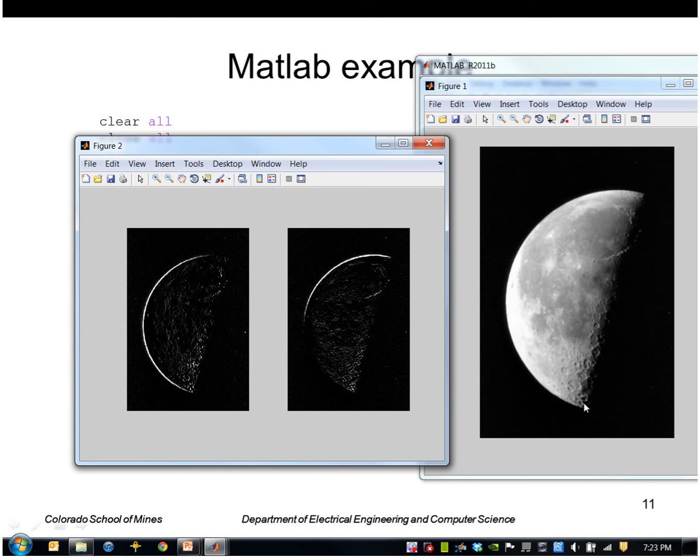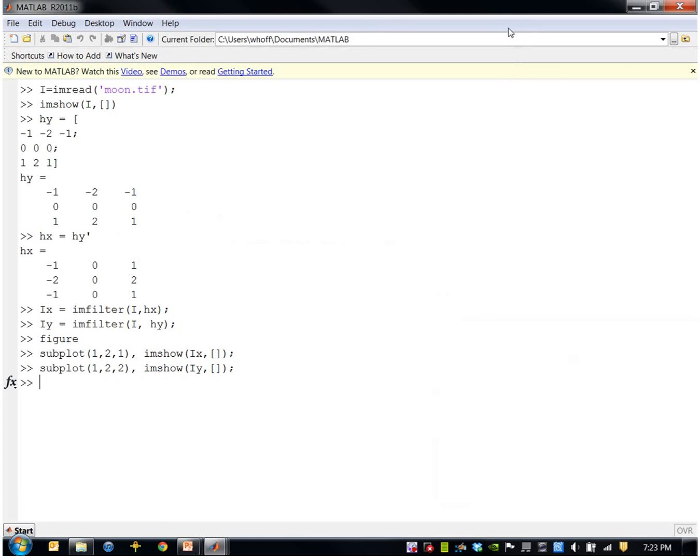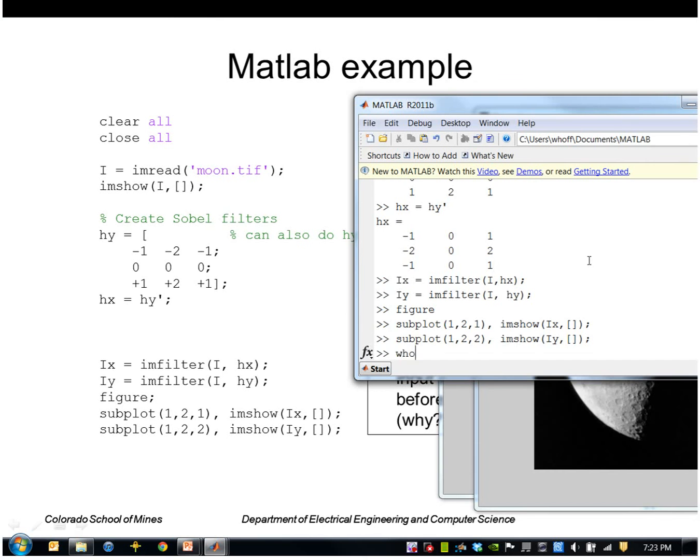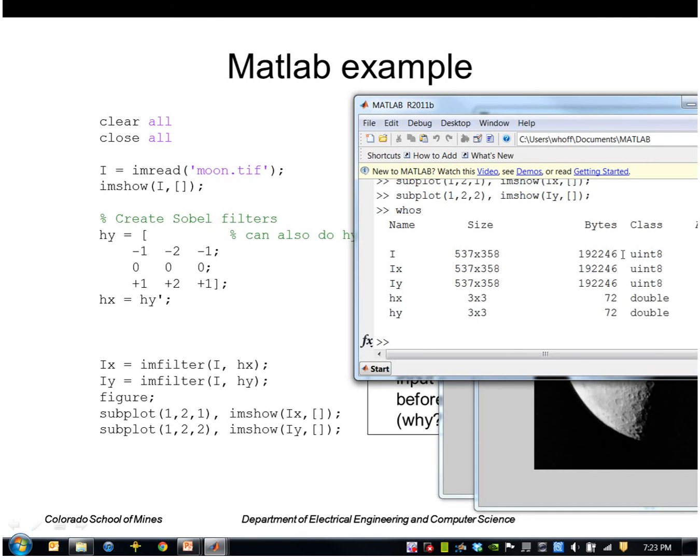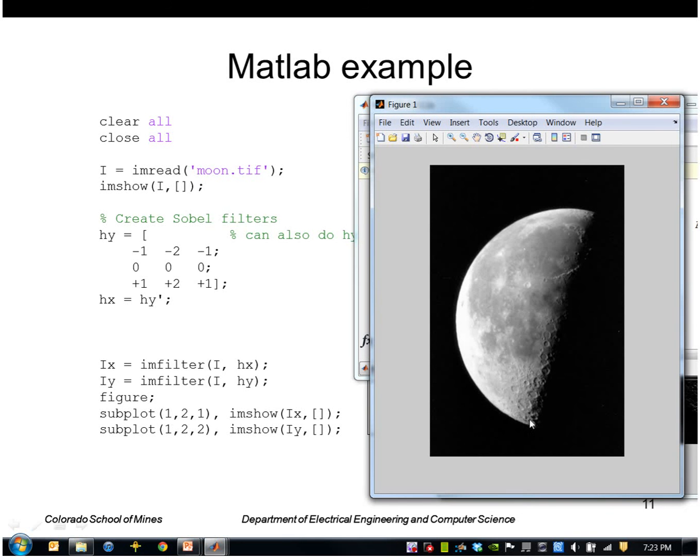The reason is that we're actually using an image that is of type unsigned 8-bit integer. So the input image was uint8, the output images are also uint8. These images cannot represent negative values. The Sobel in this area will generate negative values because we're transitioning from light to dark in this direction.